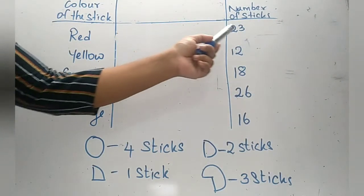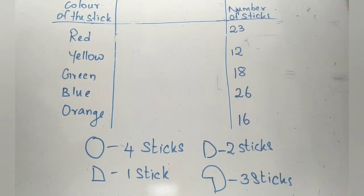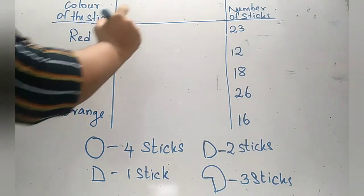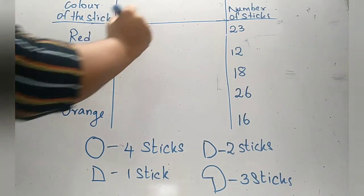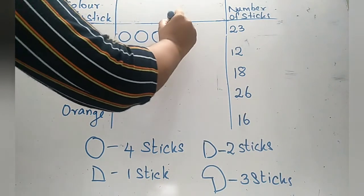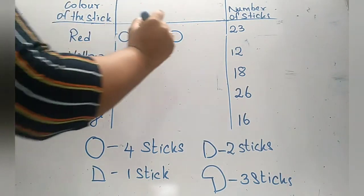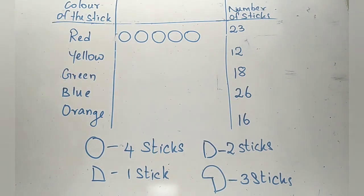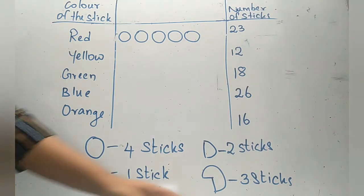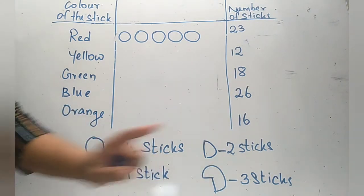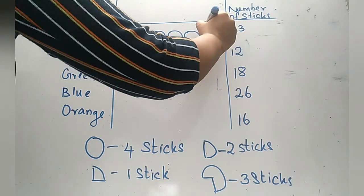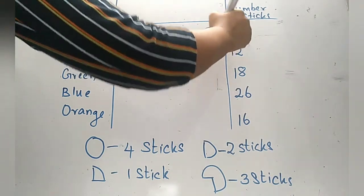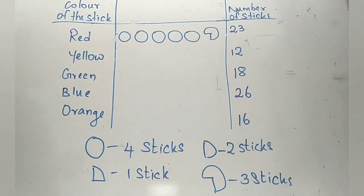Now let's look at the method to represent this data in the picture graph. First what do we have? Number 23. Four times five is twenty, so we need to draw five circles first. Four, eight, twelve, sixteen and twenty has been denoted. Now remaining three sticks are there. We can represent three sticks with the three quarter of the circle. So we need to use three quarter of this symbol to represent the number 23. Do you understand?